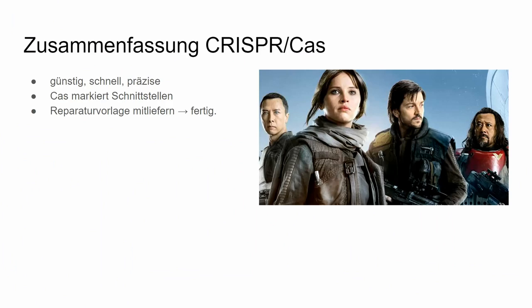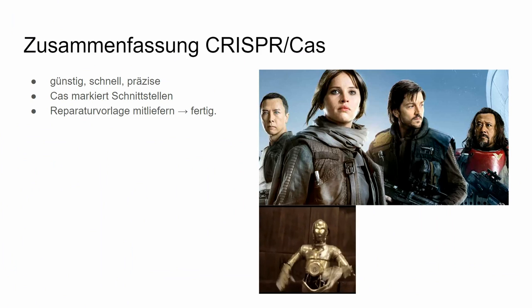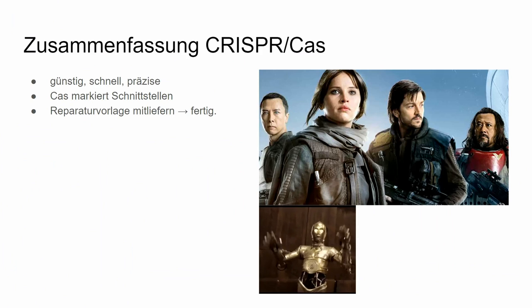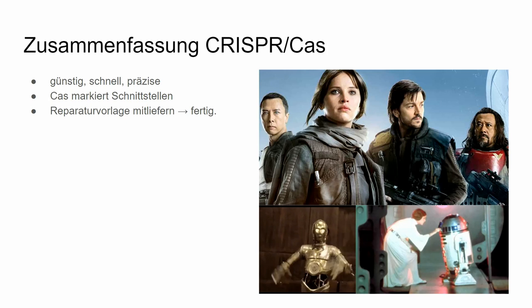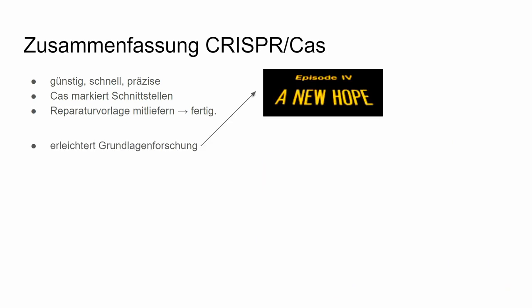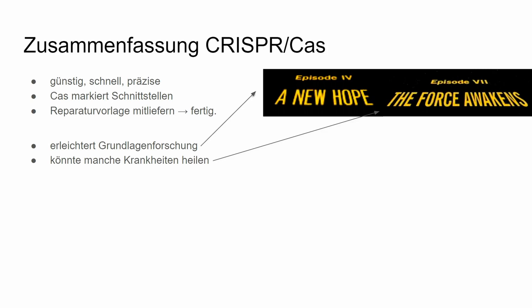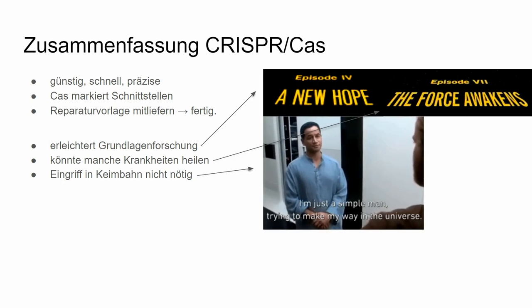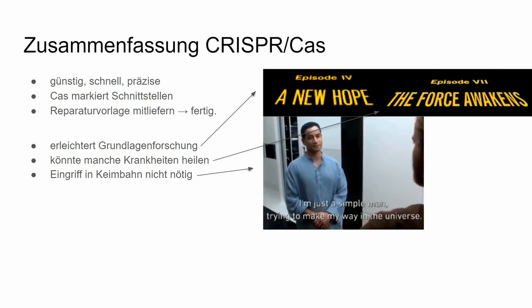Finally, how does CRISPR-Cas work? It's fast, precise, and clean. We use Cas to mark a place to cut, and if we deliver a repair template along with it, we're basically done. It makes basic research a lot easier — we can collect a lot more knowledge about how biology works, how diseases work. We can cure some diseases. You probably don't even have to work in the germline because there are other methods.